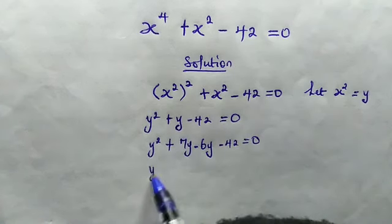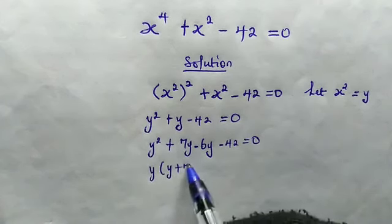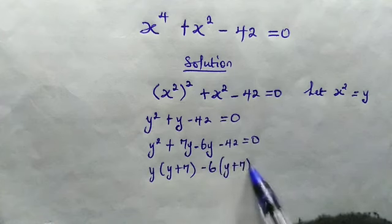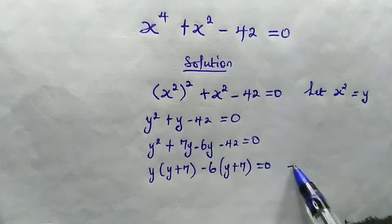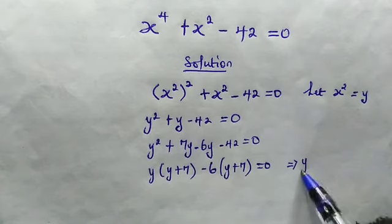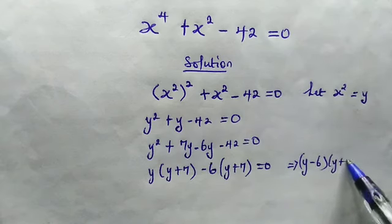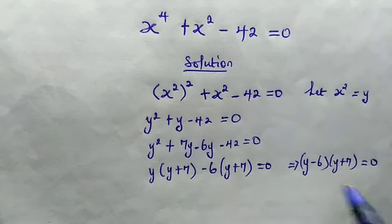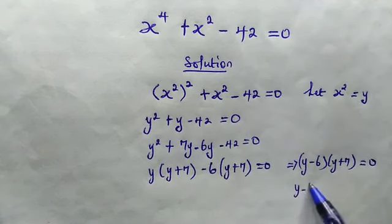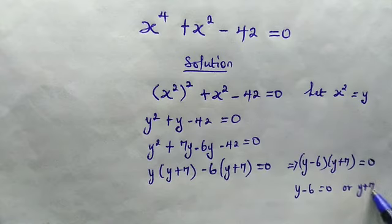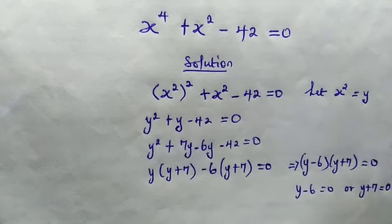From here we factor out y and we're left with y plus 7. And from this side, we factor out negative 6 and we're left with y plus 7. This is equal to 0. So from here, this implies that y minus 6 multiplied by y plus 7 is equal to 0. So we have y minus 6 is equal to 0 or y plus 7 is equal to 0.